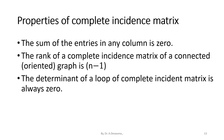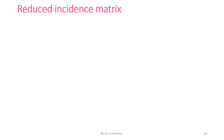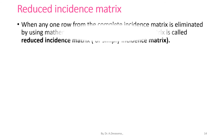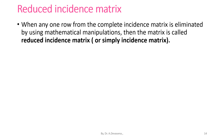Any one row of the complete incidence matrix can be obtained by algebraic manipulation of the other rows. For example, the fourth row is the negative sum of the first three rows, so we can eliminate one row. The rank of a complete incidence matrix of a connected oriented graph is N minus 1. The determinant of a loop of complete incidence matrix is always 0. Now we will discuss about the reduced incidence matrix.